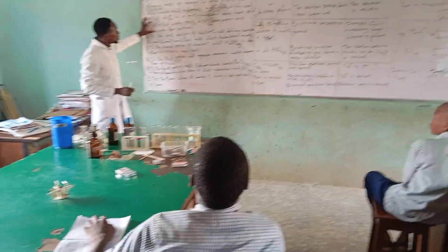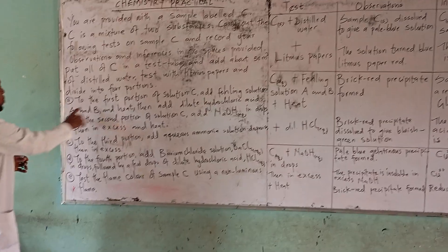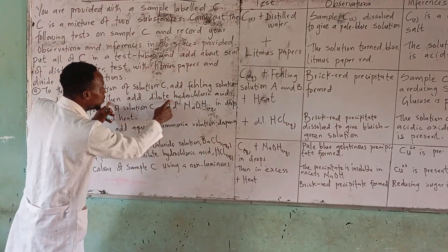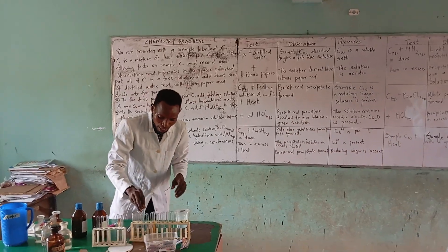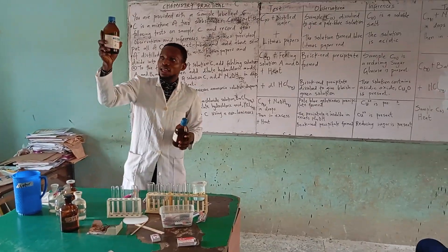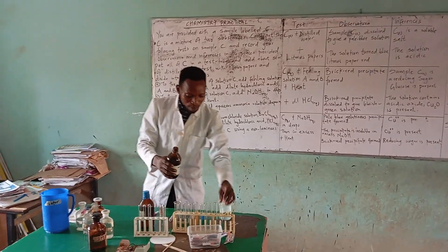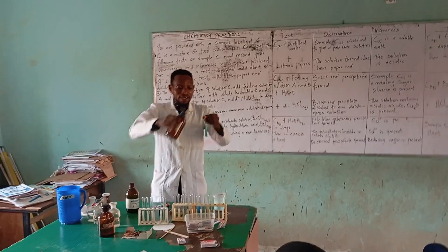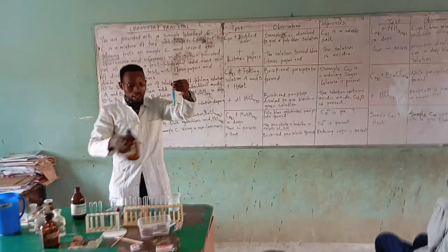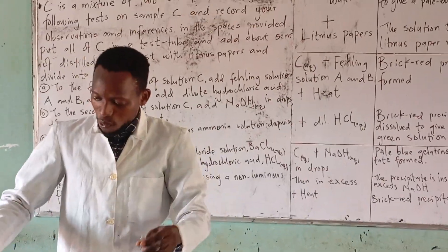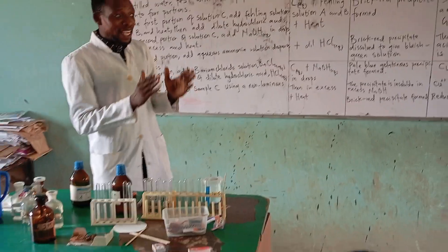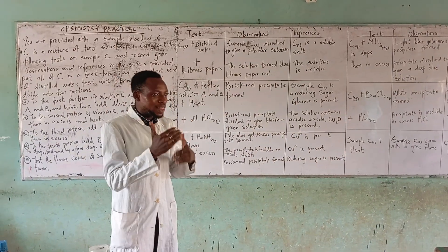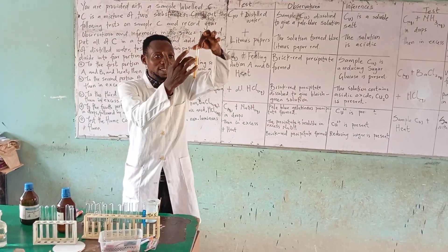We should divide our solution into four portions. To the first portion of the solution, add Fehling's solution A and B, then heat, then add dilute hydrochloric acid solution. We added our Fehling's solution A and Fehling's solution B to the sample. When you heat this sample, you are going to get a reaction. So, testing with Fehling's solution A and B and heat, you are testing for a reducing sugar.